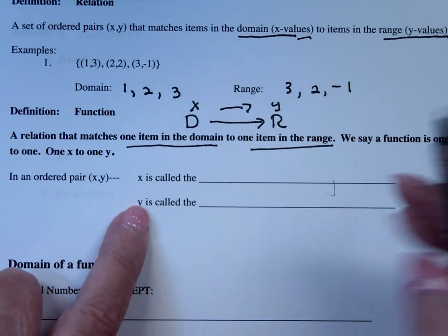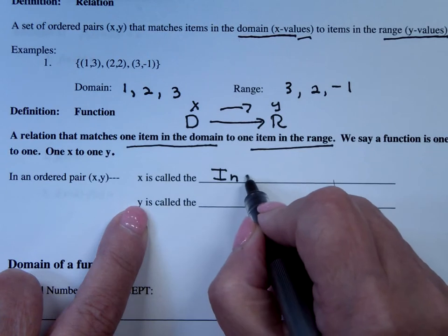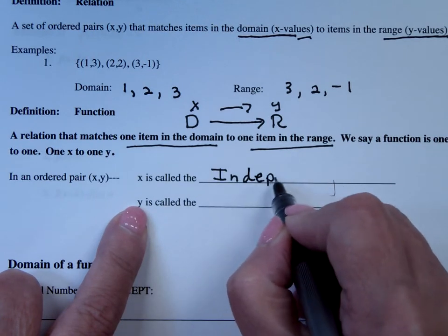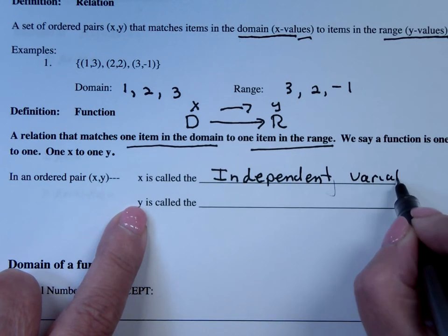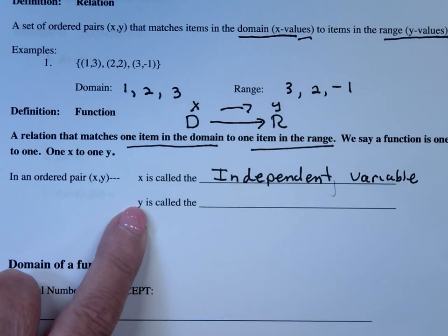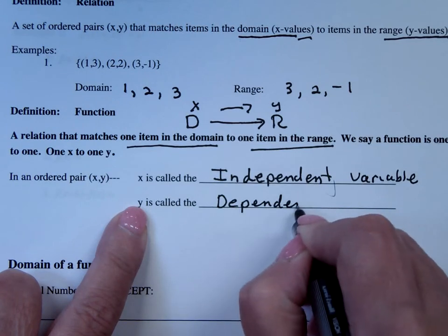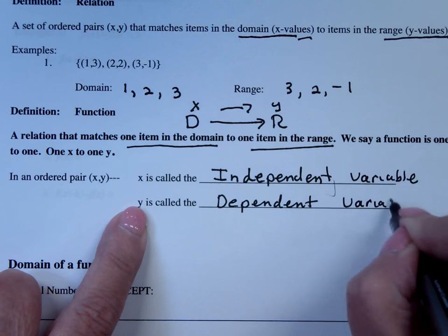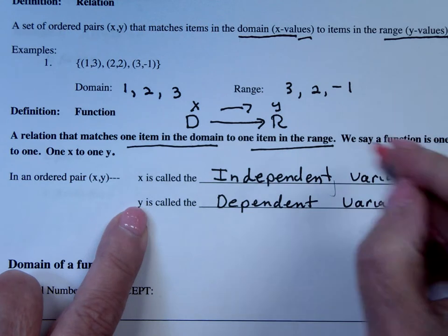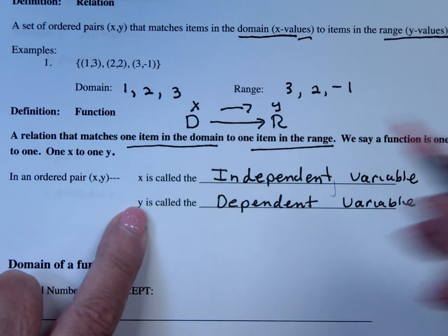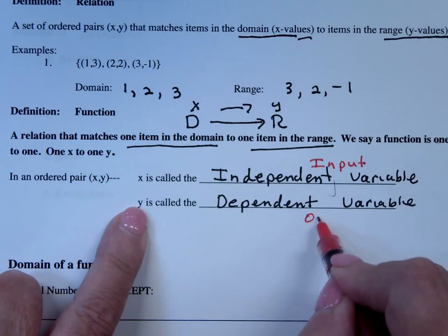In an ordered pair, x is called the independent variable, and we'll see that oftentimes in explanations of problems. And y is called the dependent variable. And that's where you get the whole idea of independent variable. That's your input. Dependent variable is your output.